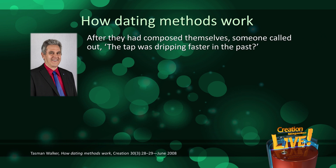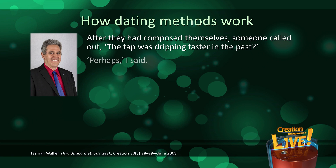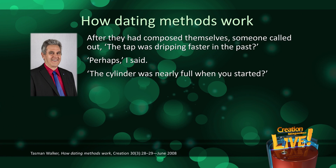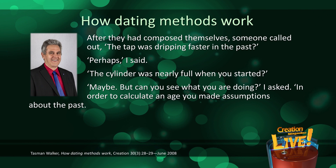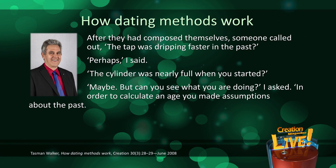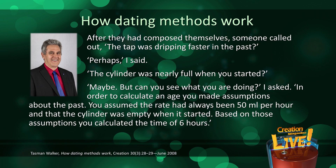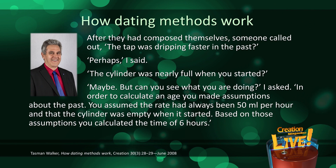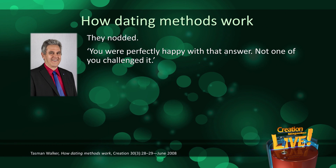After they had composed themselves, someone called out, 'The tap was dripping faster in the past?' Perhaps, I said. 'The cylinder was nearly full when you started?' Maybe. But can you see what you are doing? In order to calculate an age, you made assumptions about the past. You assumed the rate had always been 50 mL per hour and that the cylinder was empty when it started. Based on those assumptions, you calculated a time of 6 hours. They nodded. You were perfectly happy with that answer.